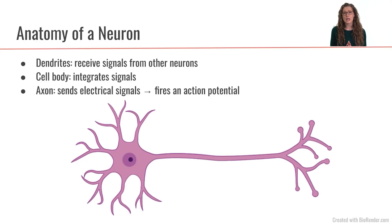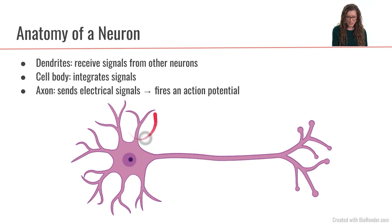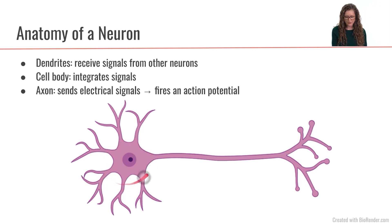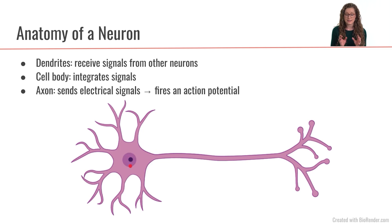So first, super basic, we're just going to go over the anatomy of a neuron. So here's your typical neuron. These regions up here are called the dendrites. You can kind of think of them like the branches of a tree. The dendrites are going to be receiving signals from other neurons. Those signals are then going to get integrated in the cell body of the neuron. We can see the cell body has a nice nucleus in the middle. And then once the cell body has integrated the signals, it is then going to send signals down its axon.